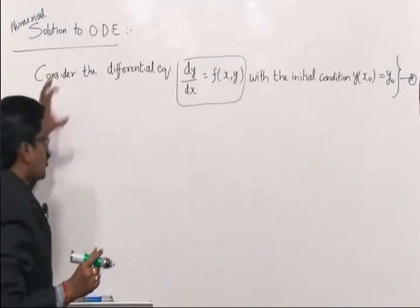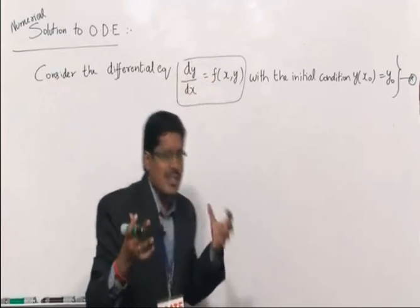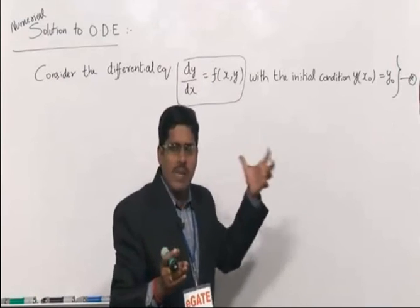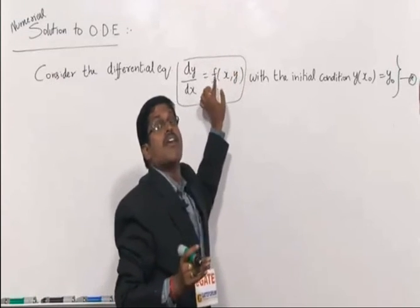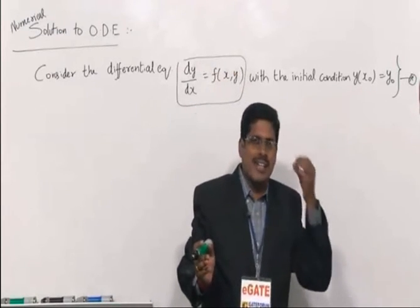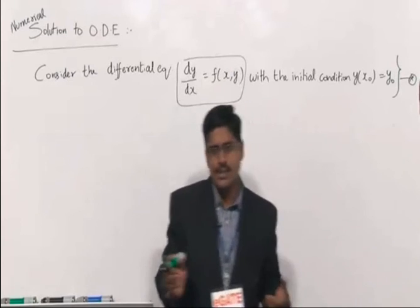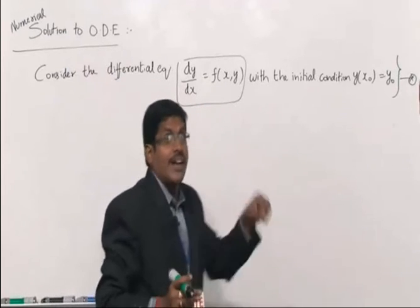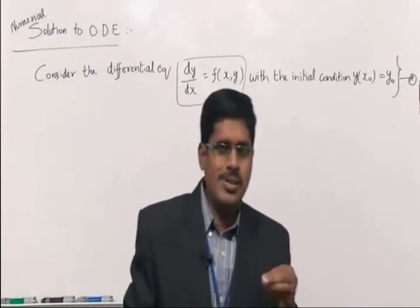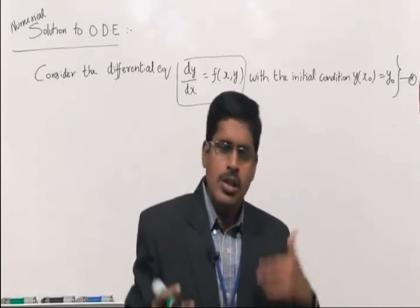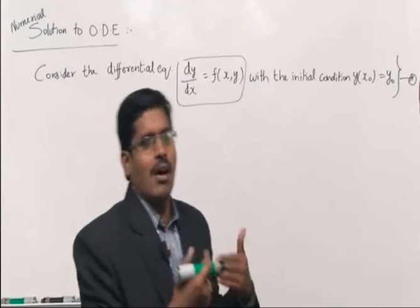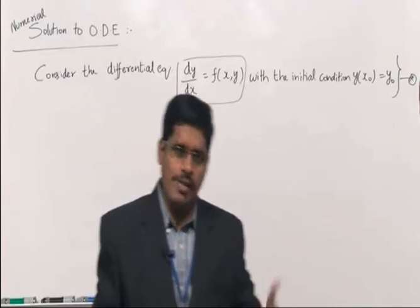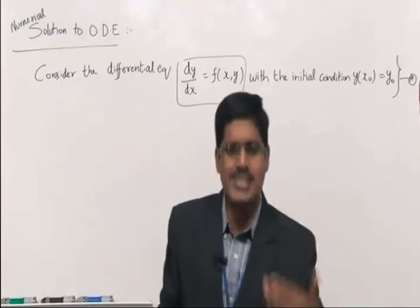In all the methods of this second topic, your equation is in standard form: the derivative dy/dx is on the left side only; all other terms are brought to the right side, denoted by f(x, y), with starting values x₀ and y₀ — these are called initial conditions. The goal of this topic is to find a y value at a particular x, for example at x = 0.1. Depending on the method and step size h, we find y₁, y₂, y₃ and so on.